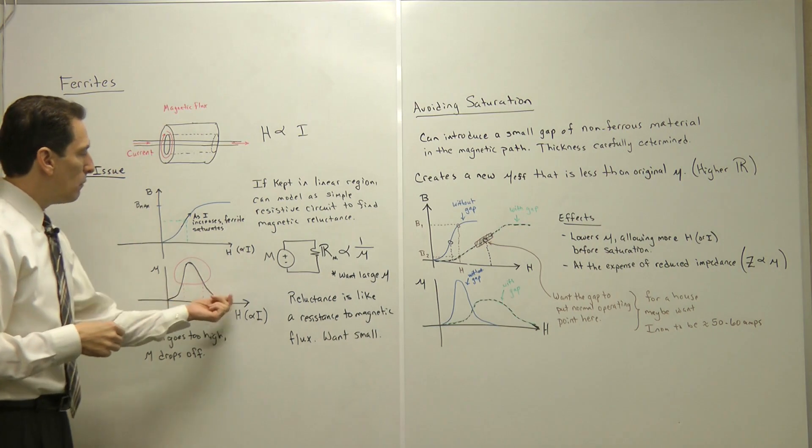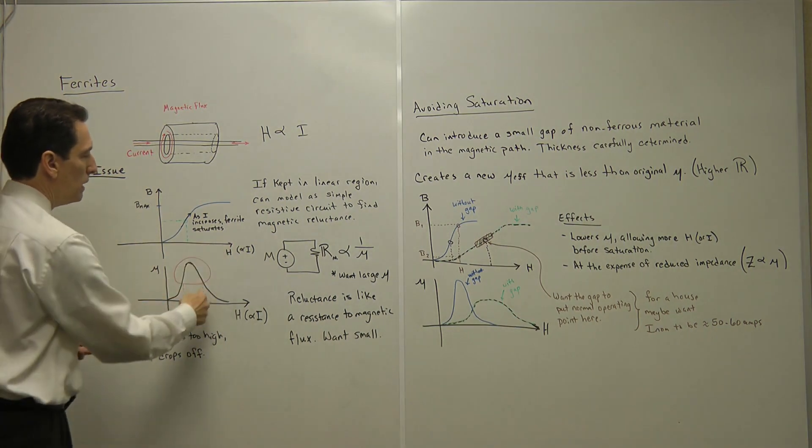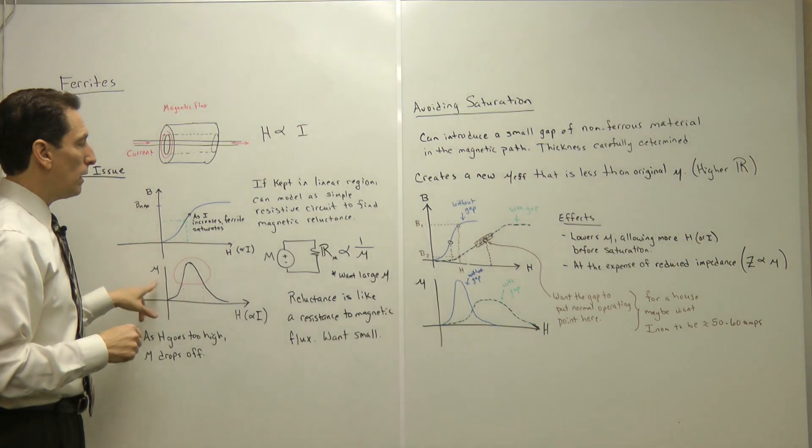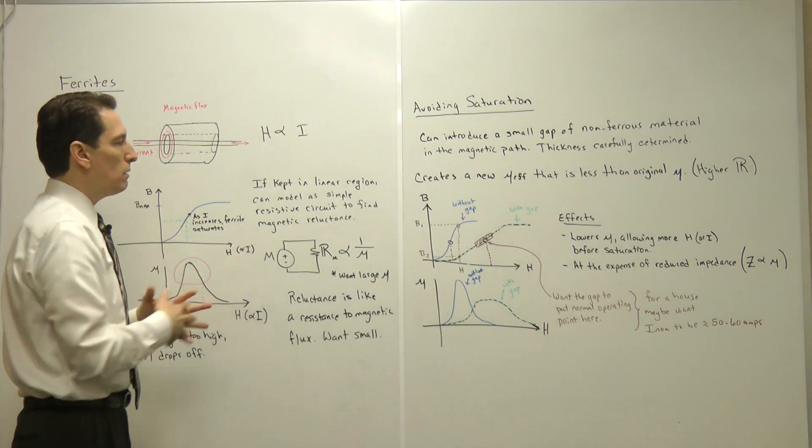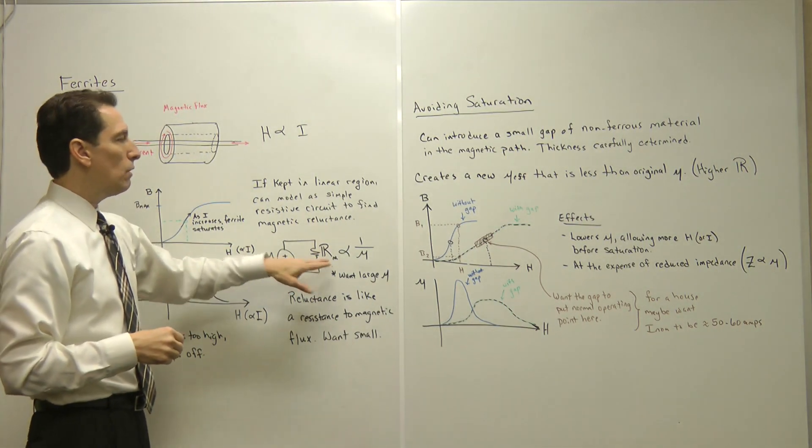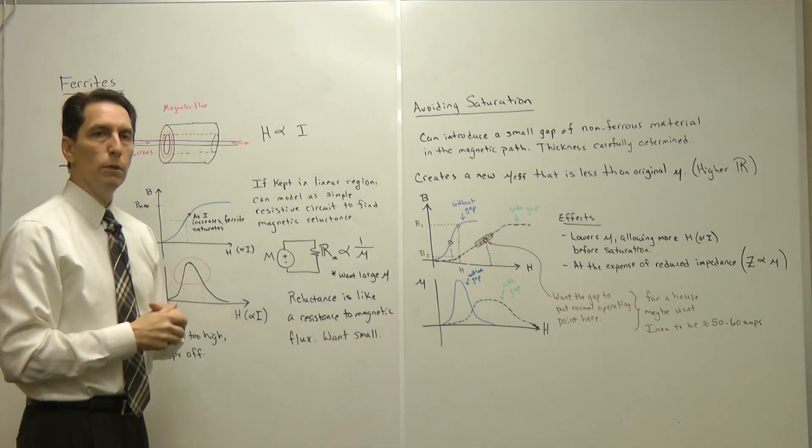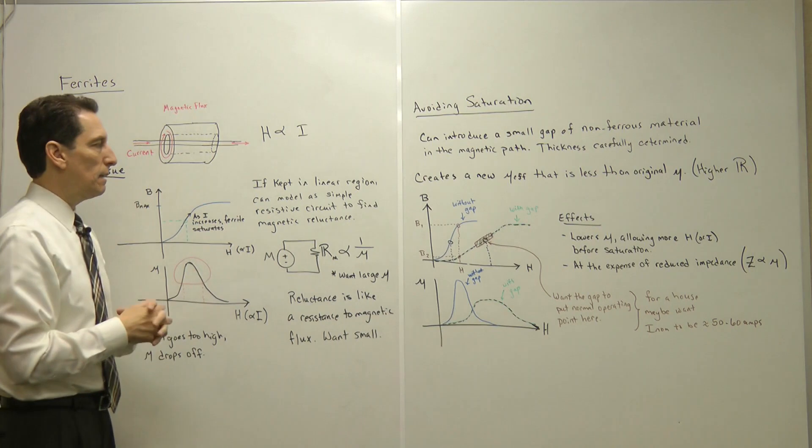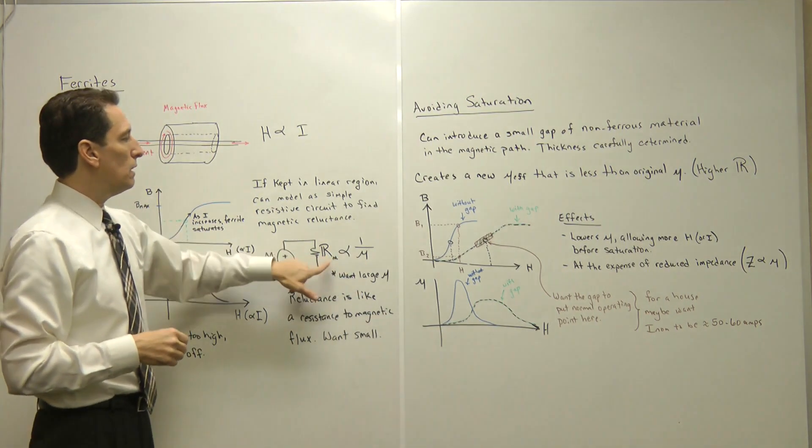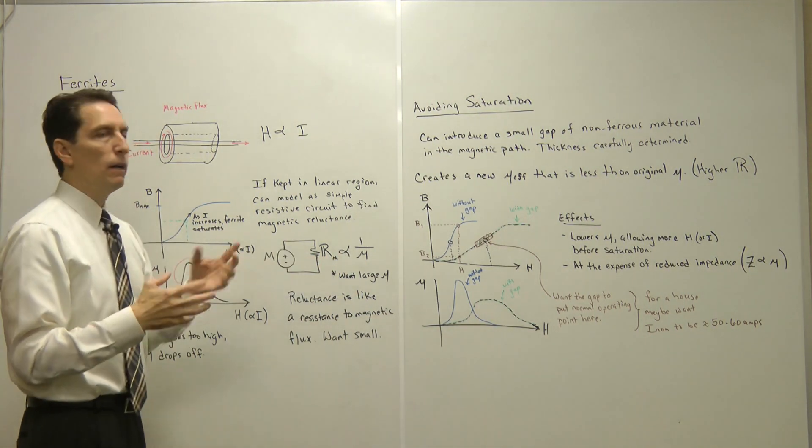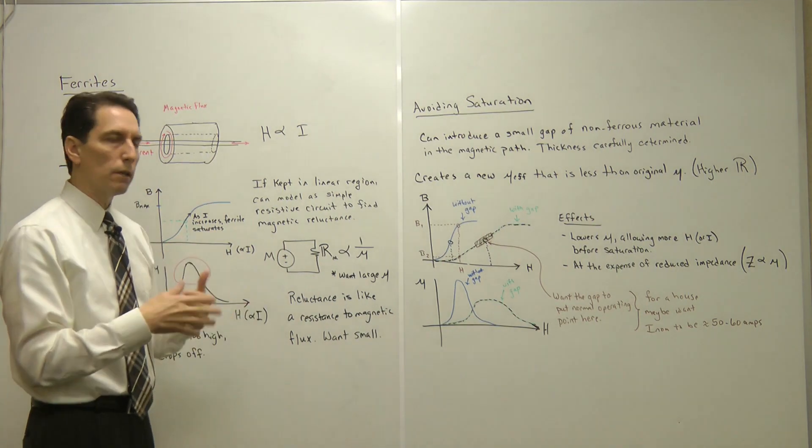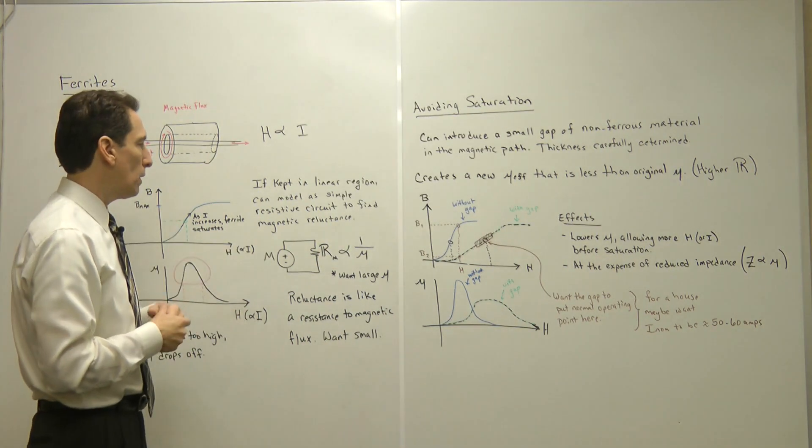We have to stay away from regions where the current's too high or we'll end up way down here on the permeability curve. There's a little circuit model that people often use. They can calculate something called the reluctance of the ferrite, and it's really just proportional to 1 over the mu. It's another way of saying the same thing. You want very high mu to get a very small reluctance. It's similar to the idea of resistance with electrical current, this is just with magnetic flux.